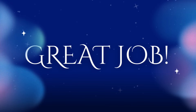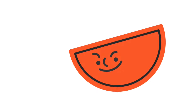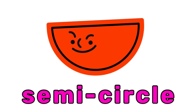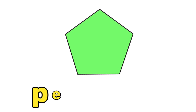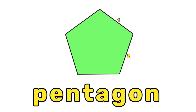Great job, kids! Let's see if you remember these shapes. What shape is this? Yes, it's a semicircle. A semicircle is half of a circle. What shape is this? Right, it's a pentagon. A pentagon has five sides.